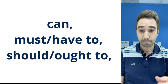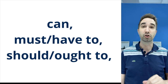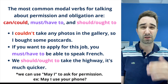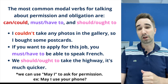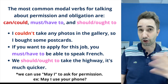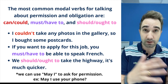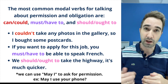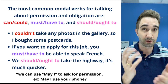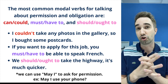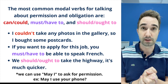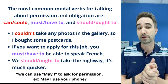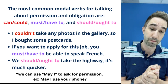First we're going to talk about can, must, and have to, and should and ought to. These are the most common verbs we use for talking about permission and obligation. We use can for present, could for past, must and have to — in my opinion, same meaning — and should and ought to, which also have very similar meaning. You can see those nicely color-coded.